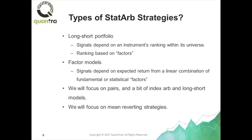The criteria used for ranking is often called a factor, and factor models are one type of long-short portfolio. There can be many types of factors — it could be statistical factors, factors as simple as a technical indicator, complicated factors created from principal component analysis, or fundamental factors extracted from the financial statements of companies. Factor modeling is a very vast subject and will not be covered in this course, but it is worth including as one type of statistical arbitrage strategy that people often trade.